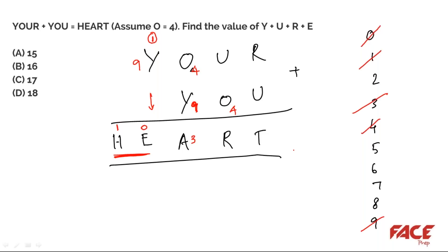Next, U + O = R, meaning U + 4 = R. There cannot be a carryover here, so the answer must be a single digit. If U = 8, then 8 + 4 = 12 — carryover, not allowed. If U = 7, then 7 + 4 = 11 — carryover, not allowed. If U = 6, then 6 + 4 = 10 — still a carryover, not allowed.